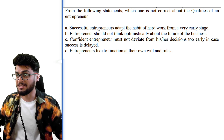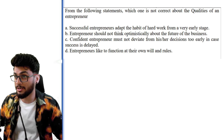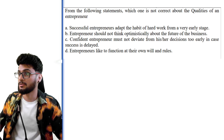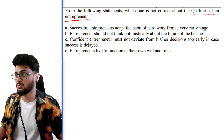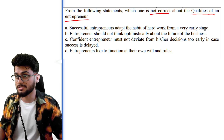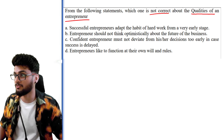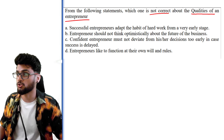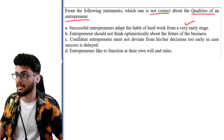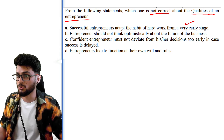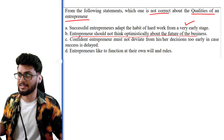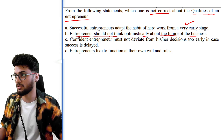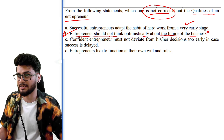'From the following statements, which one is not correct about the qualities of an entrepreneur?' Successful entrepreneurs adapt the habit of hard work from a very early stage — that is the right quality. 'Entrepreneur should not think optimistically about the future of the business' — this statement is saying an entrepreneur should think negatively, which is the wrong statement. Hence it is not correct and B is the correct answer.